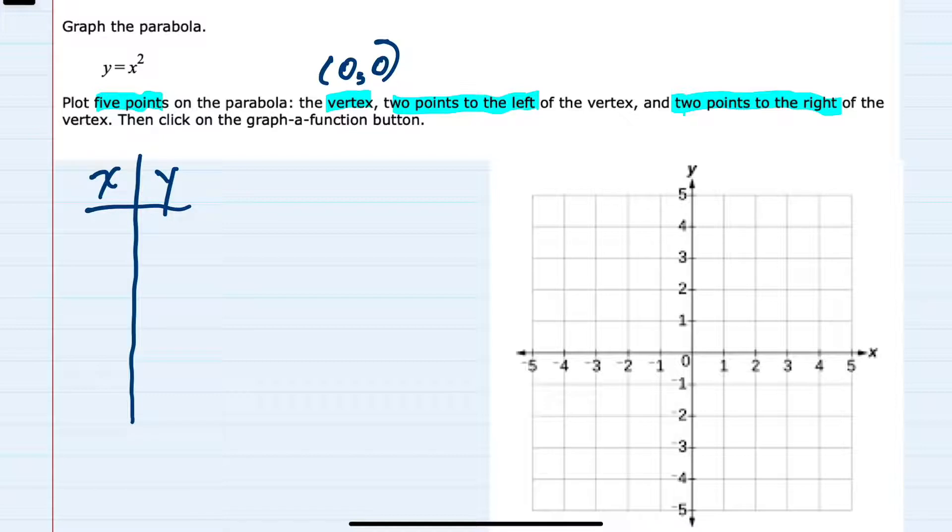So in our table that I'll use to find five points, I know that the vertex (0, 0) will be one of those points. I can go ahead and plot that. And since we want two points on the left and two points on the right,